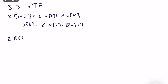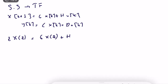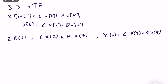So z·X(z) = G·X(z) + H·U(z), and Y(z) = C·X(z) + D·U(z). Rearranging, we get (zI - G)·X(z) = H·U(z).